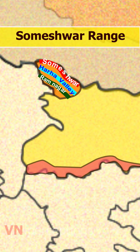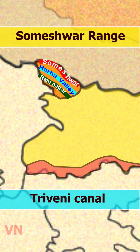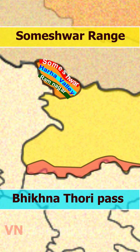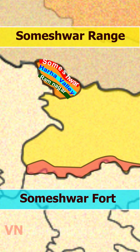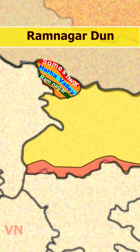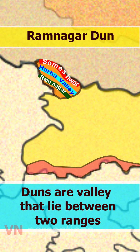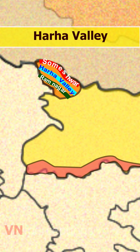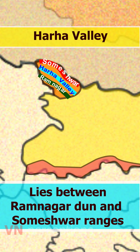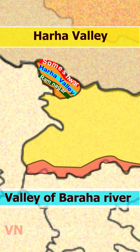The Someshwar Range extends from the mouth of Triveni Canal up to Bikhna Thori Pass. It forms a boundary between India and Nepal and the highest point is Someshwar Fort at a height of 874 meters. Doons are valleys which lie between two ranges. The Ramnagar Doon lies on the southern side of the Someshwar Hills, marked by broken hilly regions. The Haraha Valley lies between the Ramnagar Doon and Someshwar Range and is commonly known as the Valley of Baraha River.